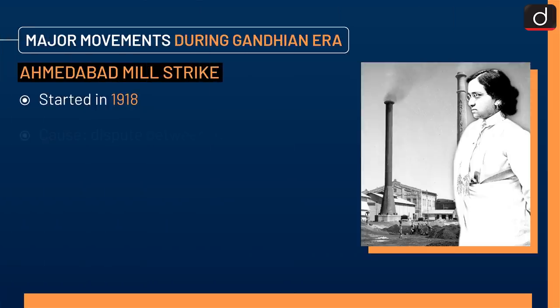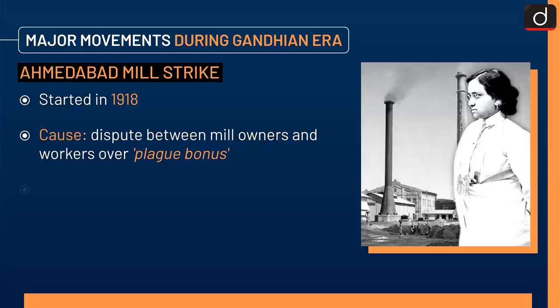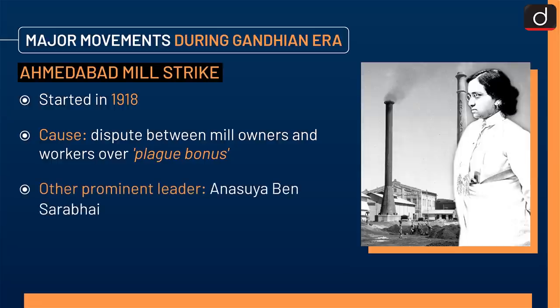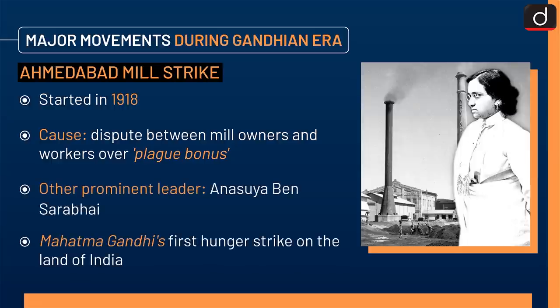Next is the Ahmedabad Mill Strike of 1918. The cause was a dispute between mill owners and workers over plague bonuses. Another prominent leader was Anusuyaben Sarabhai. This was Mahatma Gandhi's first hunger strike on the land of India.